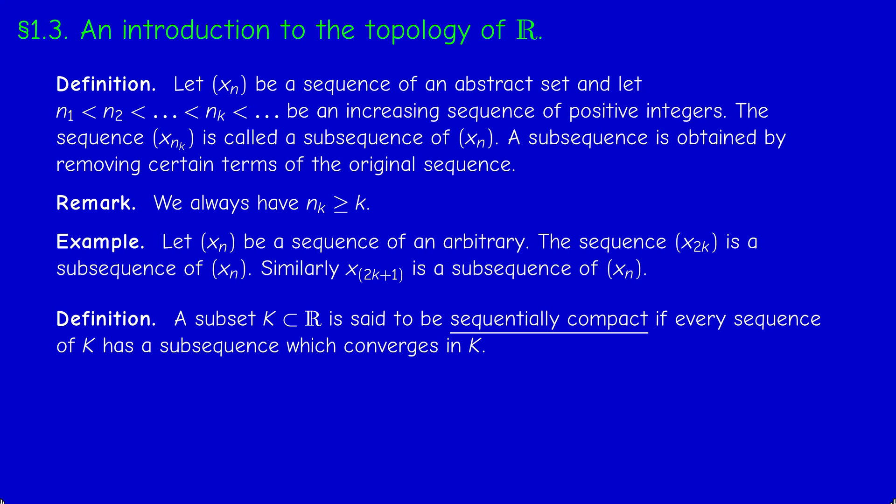For example, if you take the sequence of integers - just 1, 2, 3, 4, 5 - this is a sequence of R, but it has no convergent subsequence. Why? Because the whole sequence diverges, tends to infinity. So no matter how many terms you delete, the resulting sequence cannot be convergent because it's unbounded.